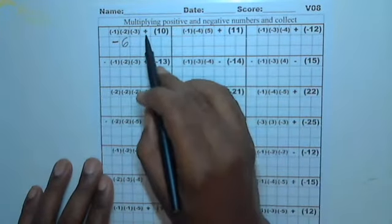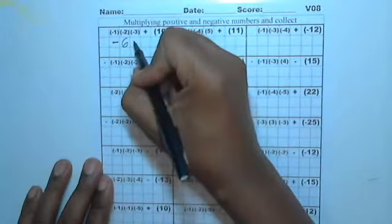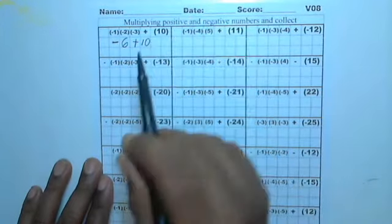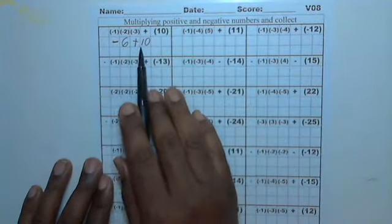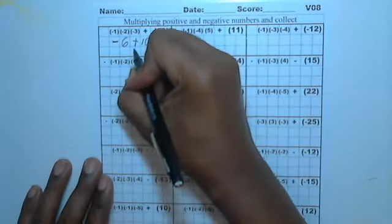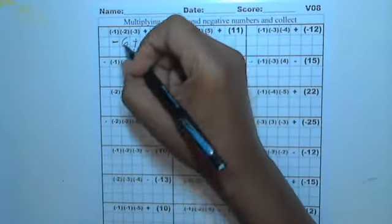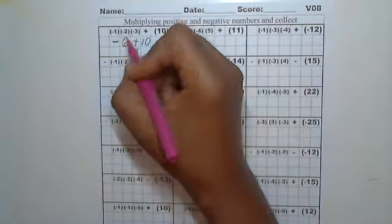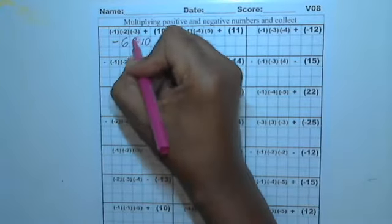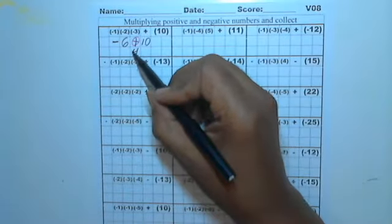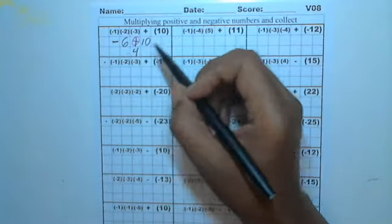This is a positive and a 10, so we're going to bring those down — a positive and a 10. Now these are different signs. Different signs will subtract, so 10 from 6 leaves 4. The bigger sign always wins. The 10 is the bigger number, so the bigger sign will be positive. So this will be a positive 4.